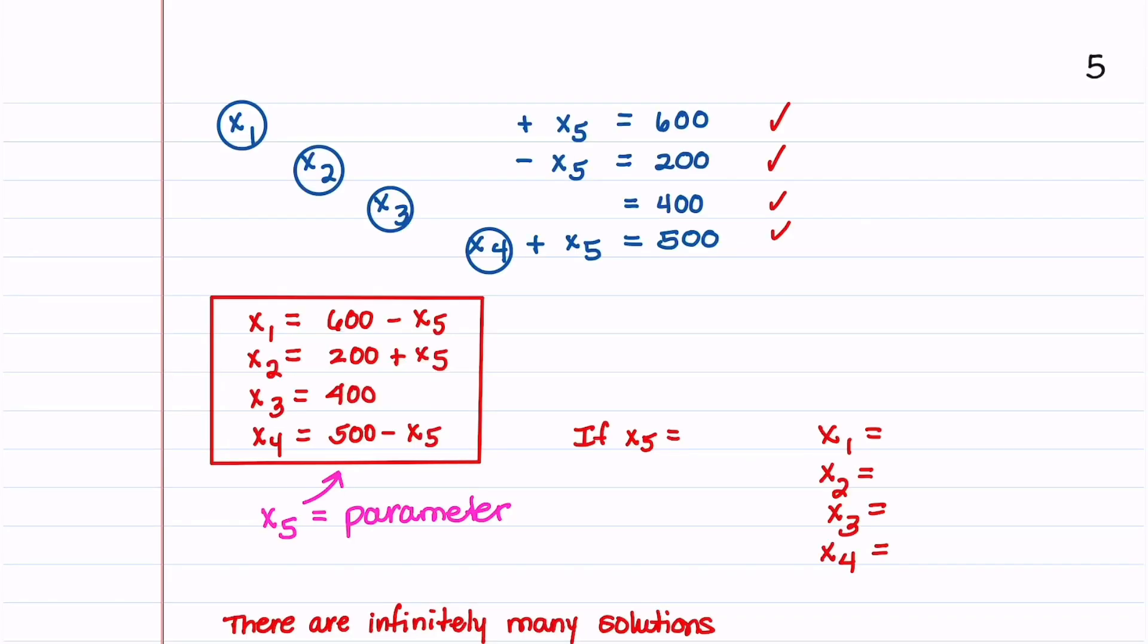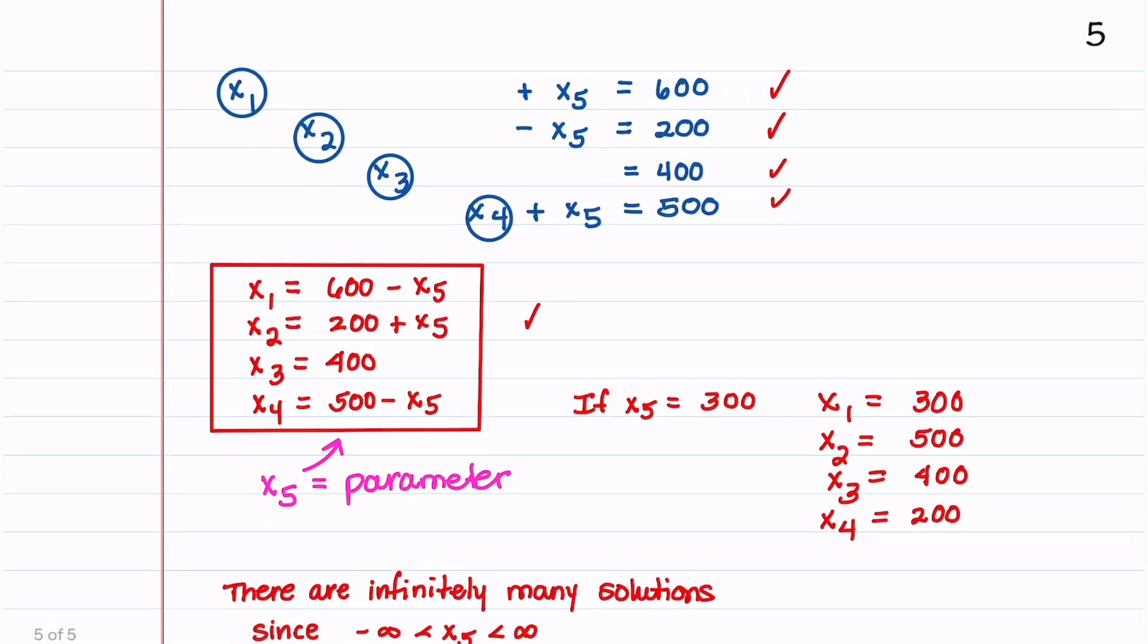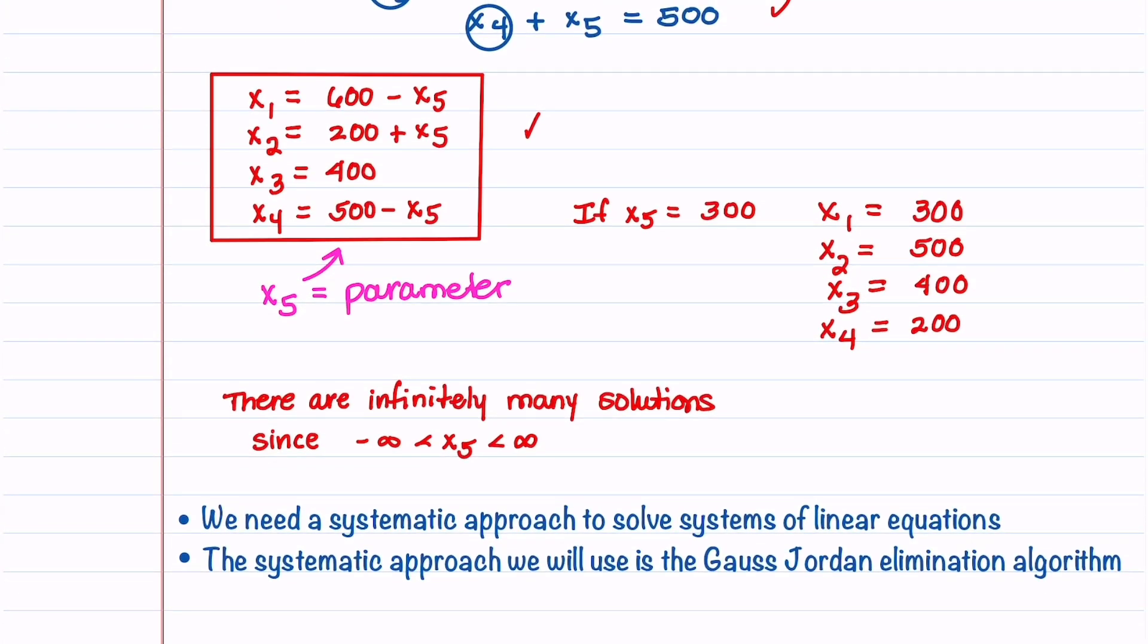If we let x5 be 300, then x1 is going to be 600 minus 300 which is 300. x2 will be 500. x3 stays fixed at 400. And x4 is going to be 500 minus 300 which is 200.